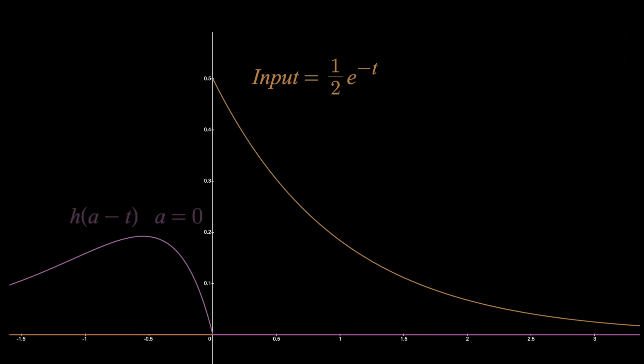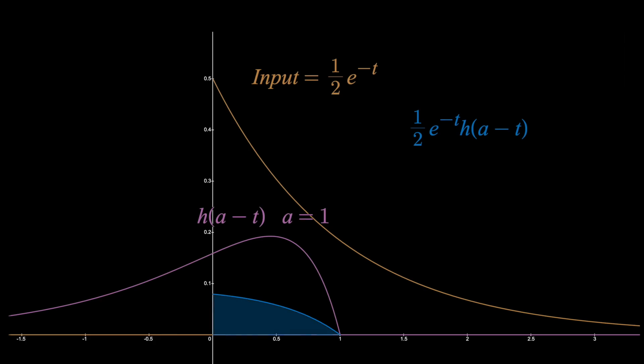Mathematically, this is written as h of some constant A minus t, where A is currently zero. If we let A go to one, then we'd get this here. Then what we do is multiply these two functions together, giving us the curve in blue. And it's the area under this curve that tells us the output at time A.